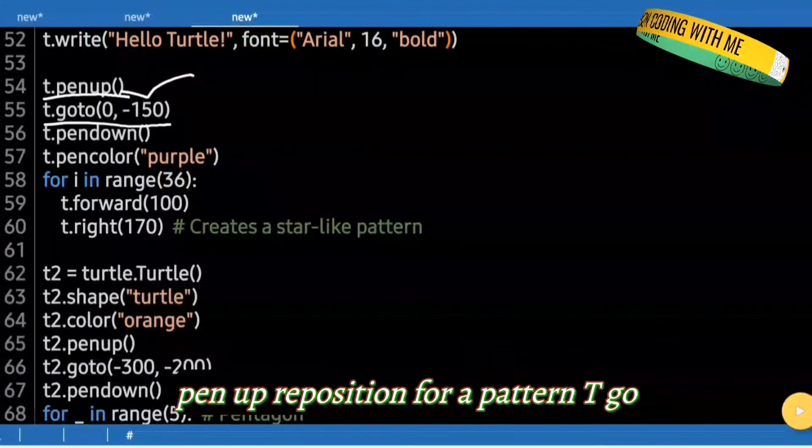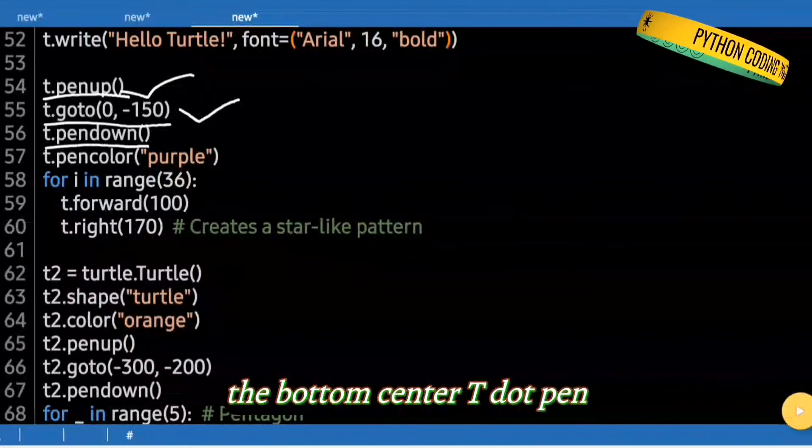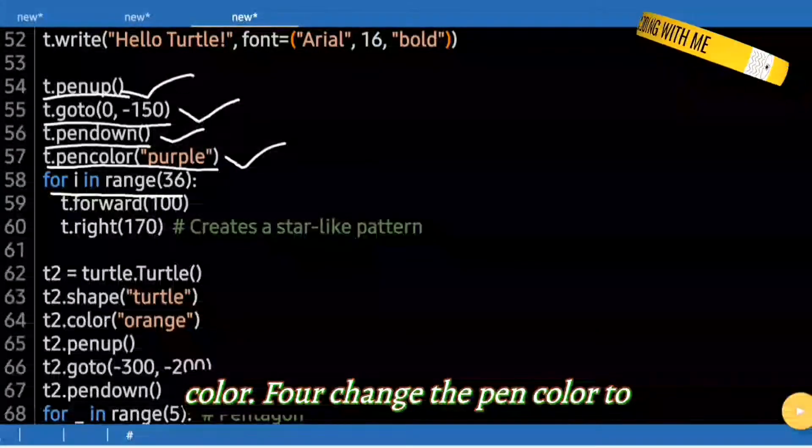t.penup(). Pen up, reposition for a pattern. t.goto(0, -150). Move to negative 150. Near the bottom center. t.pendown(). Pen down, start drawing. t.pencolor("purple"). Change the pen color to purple.